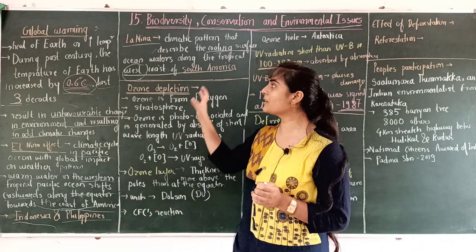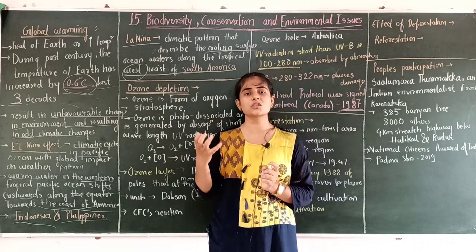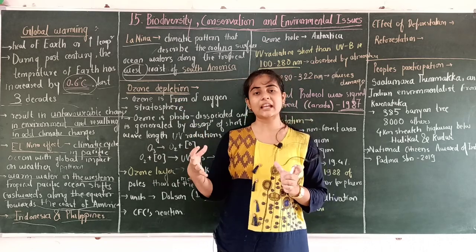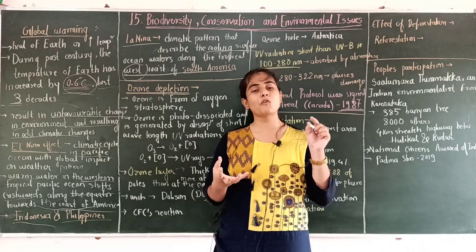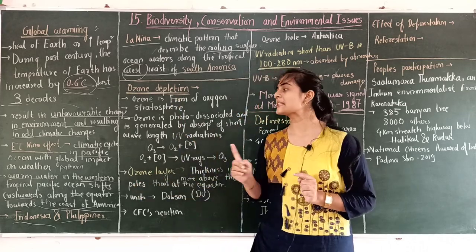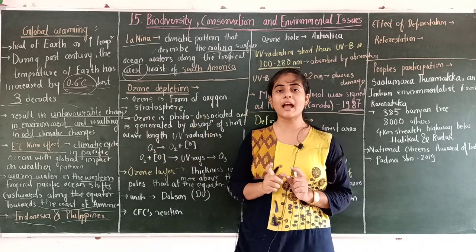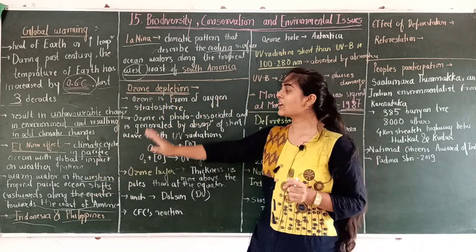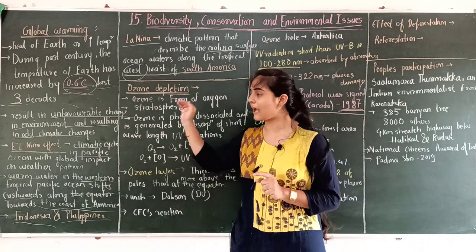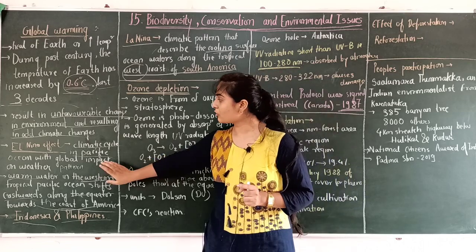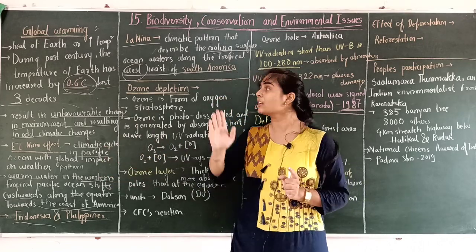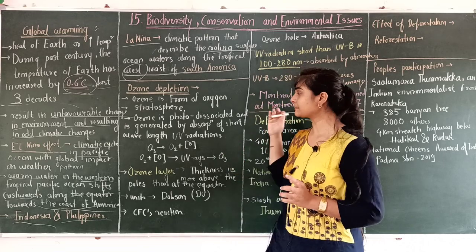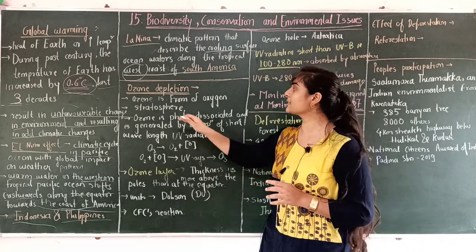This is basically global warming — the odd climatic changes along the globe directly impact through El Niño effect and La Niña effect. We have discussed greenhouse effect as the reason for global warming, and today we discussed the effects: El Niño effect and La Niña effect. This completes the global warming section. Next topic today is ozone depletion.